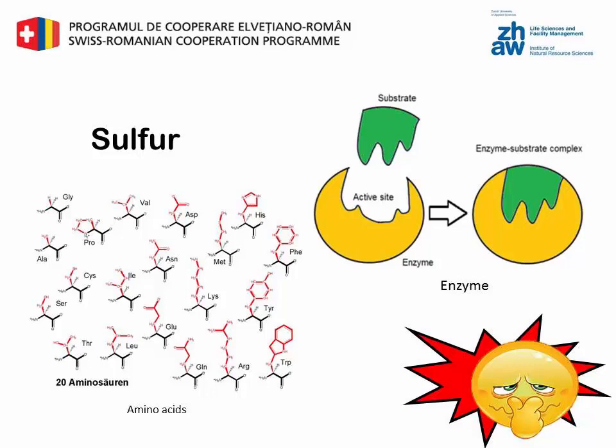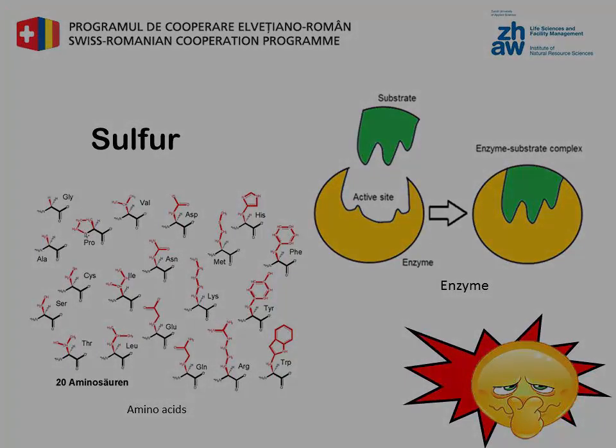Sulfur is used for the production of sulfur-containing amino acids, cysteine and methionine, for the formation of disulfide bridges for the tertiary structure of proteins, and for the formation of conveyor enzymes.